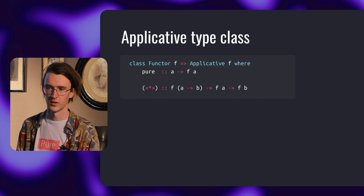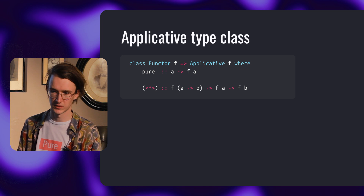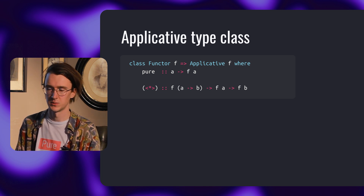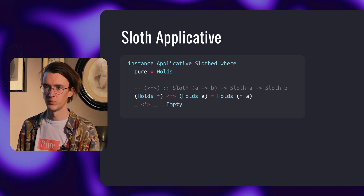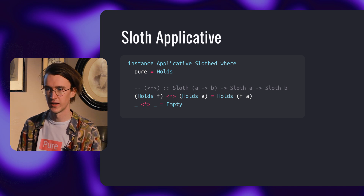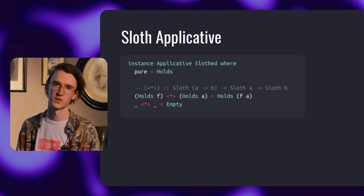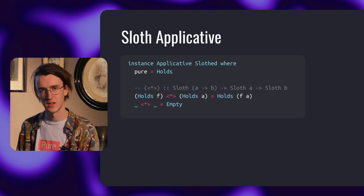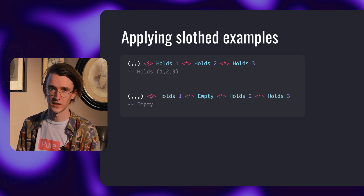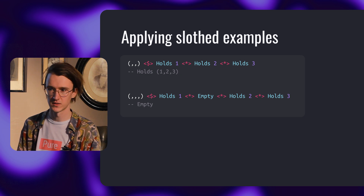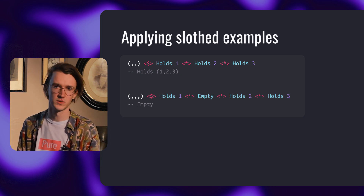Applicative also has a function pure, which lifts arbitrary values into the context. The full example looks like this: we are applying an addition function to the values with a context. Or with the map operator, it looks a bit different — a couple of characters shorter. Here's the sloth's applicative instance implementation. Pure just gives a value to a sloth to hold, and apply applies the function to the value if the sloth holds both of them, and results in empty otherwise. In the first case, all three values are there and the function returns a triplet of them. In the second case, one of the arguments is empty, so the result is just empty. And it works with a different number of arguments.